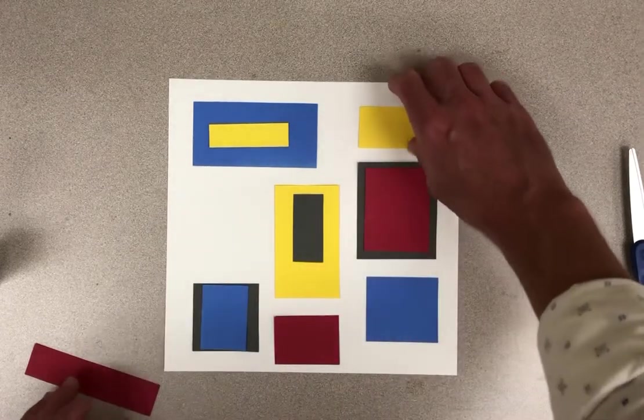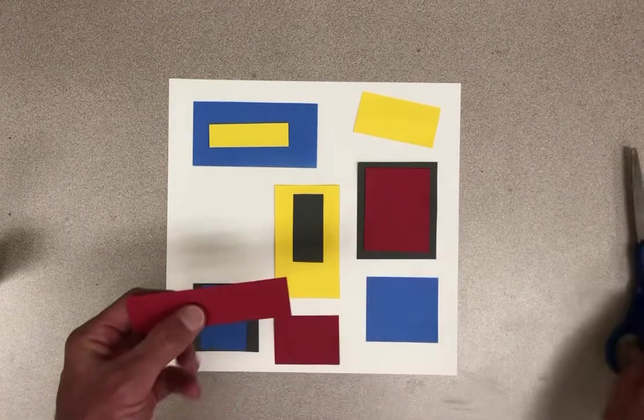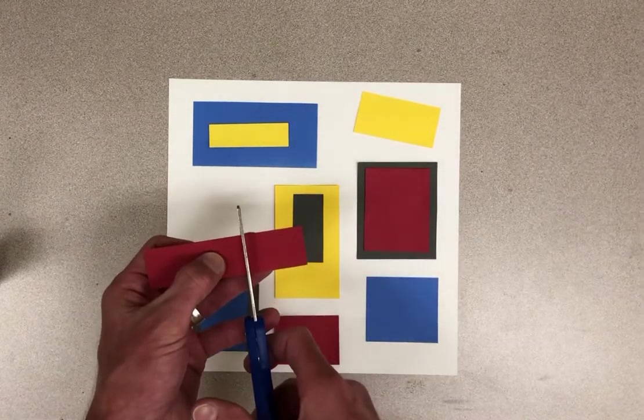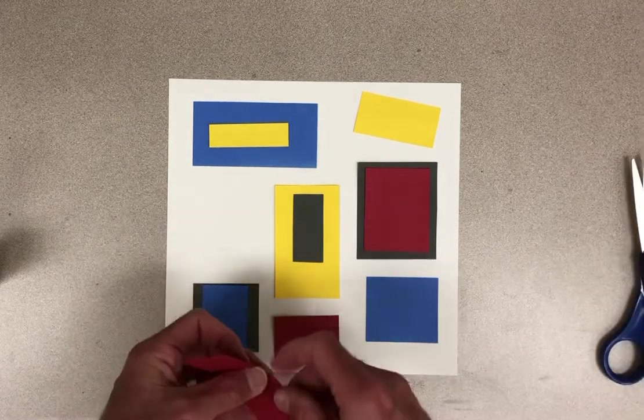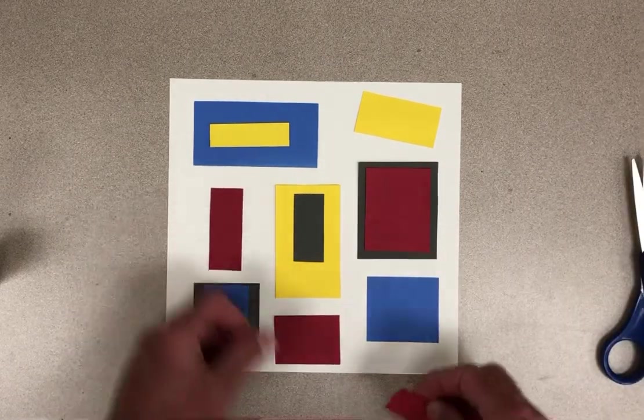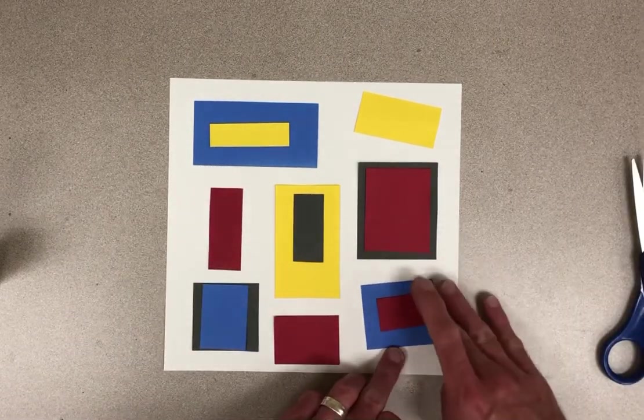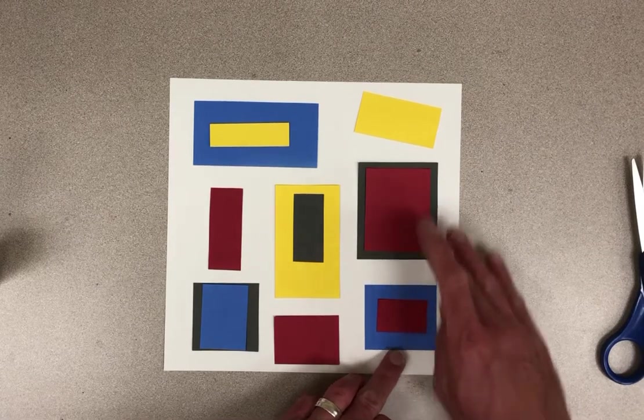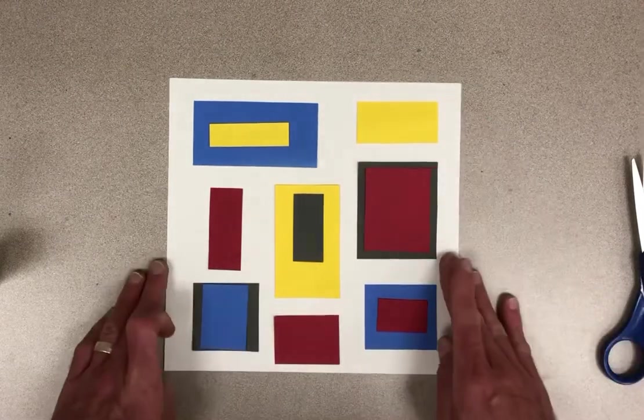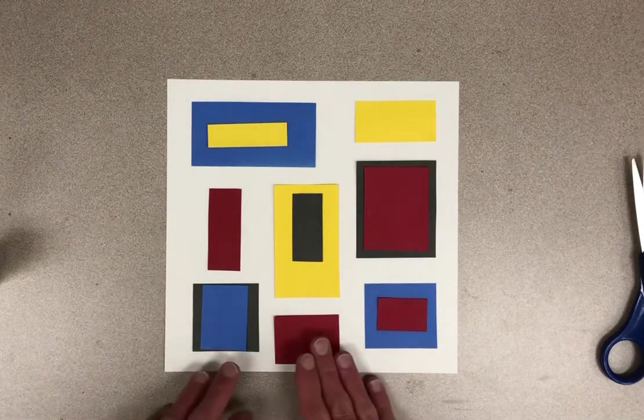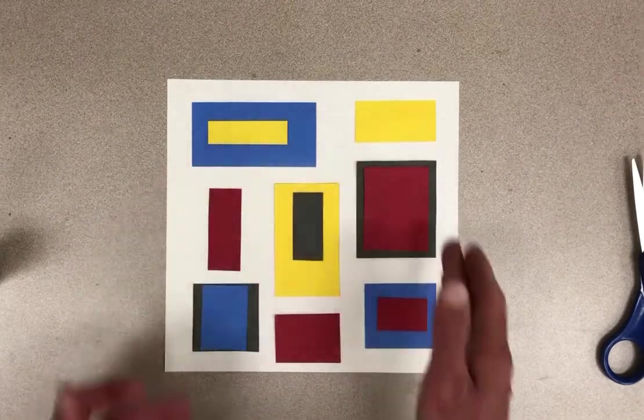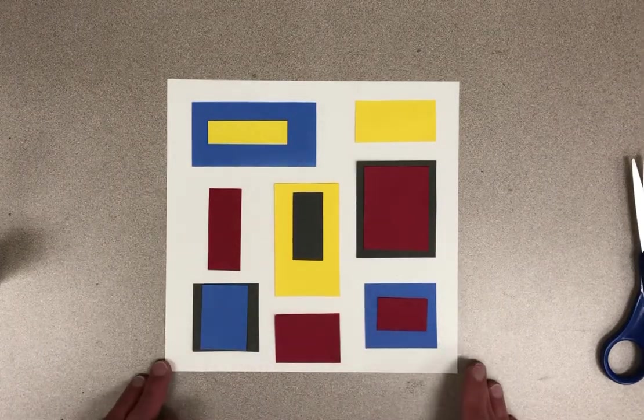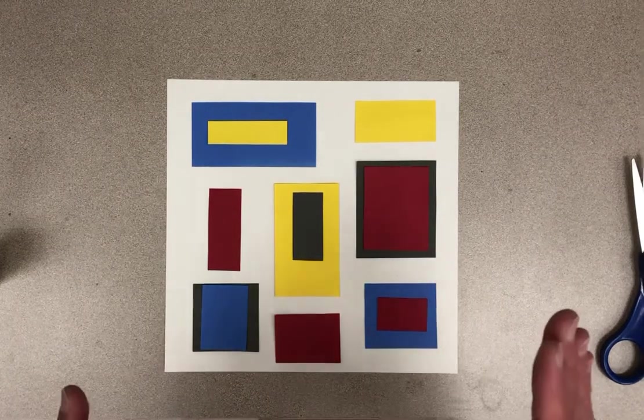Then I could probably go like this and this would end up being four pieces out of that one instead of three just because I didn't have room for it. So that would be okay if you need to trim one, but for the most part three rectangles out of each should work.